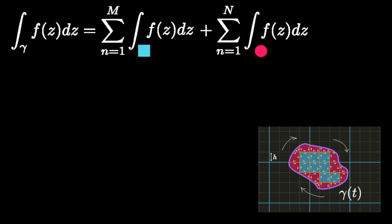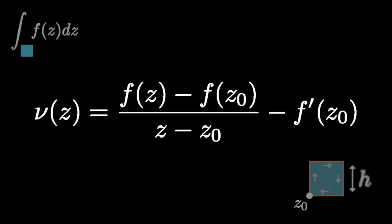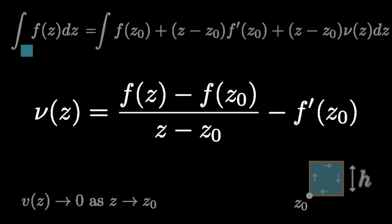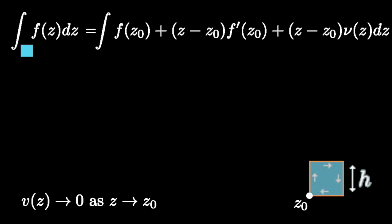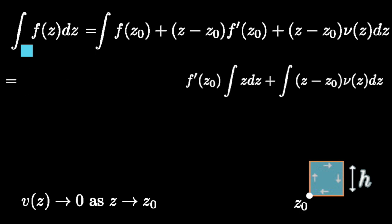Let's consider one of the integrals over the boundary of a blue square. Let z0 be the point corresponding to the bottom left corner of the square. Since f is complex analytic at z0, we can rewrite f using the definition of the complex derivative, defining a new function nu of z which goes to zero as z goes to z0. Grouping terms into three integrals: we've already shown that the integral of dz around a closed curve is zero, and the integral of z dz around a closed curve is zero. For the final term, since we can make the side length of the square as small as we like, taking the limit as h goes to zero shows the only possible value for the integral is zero.